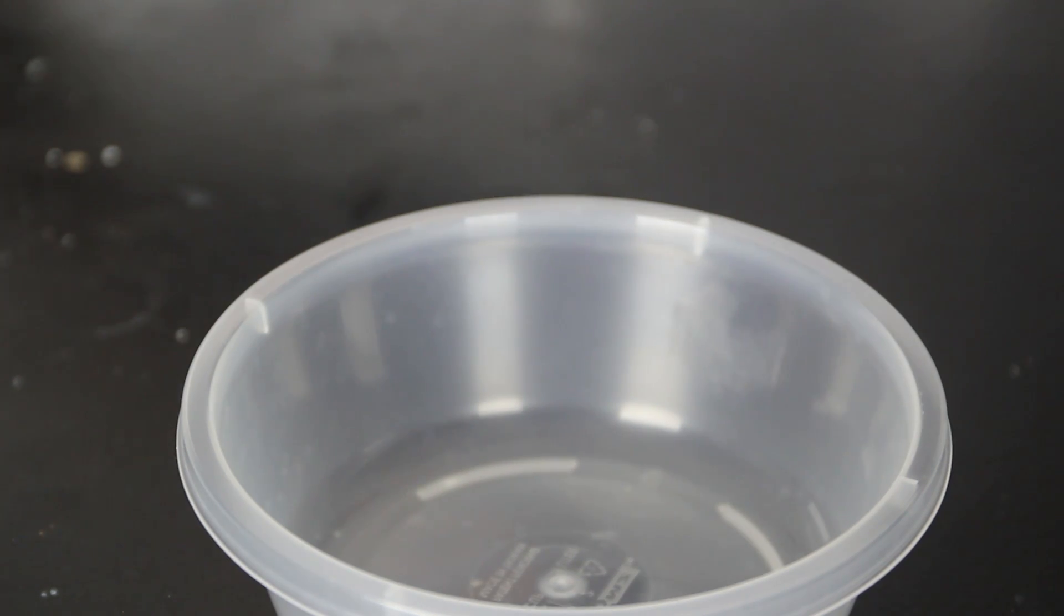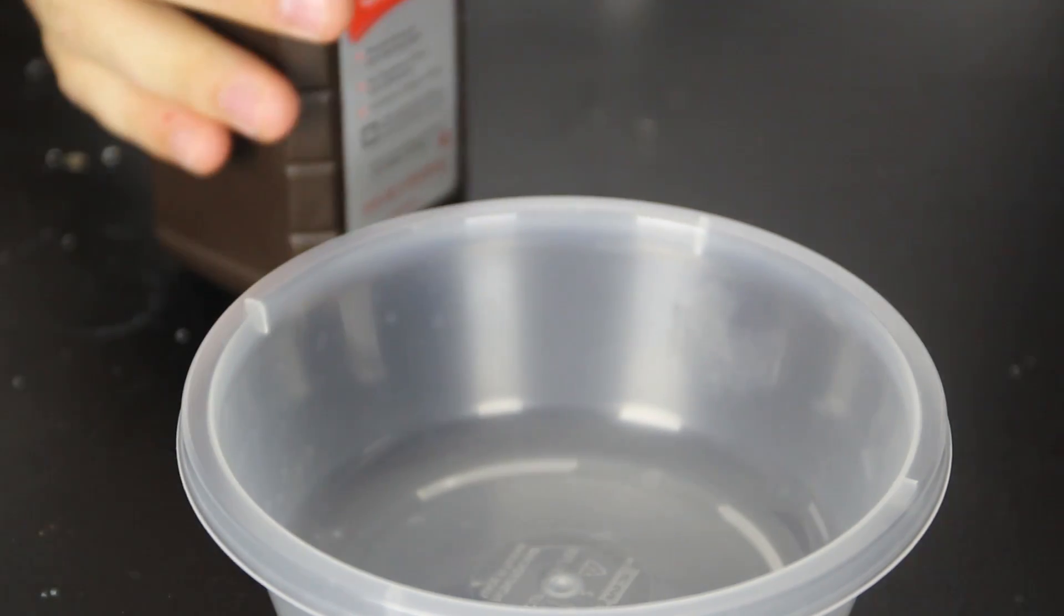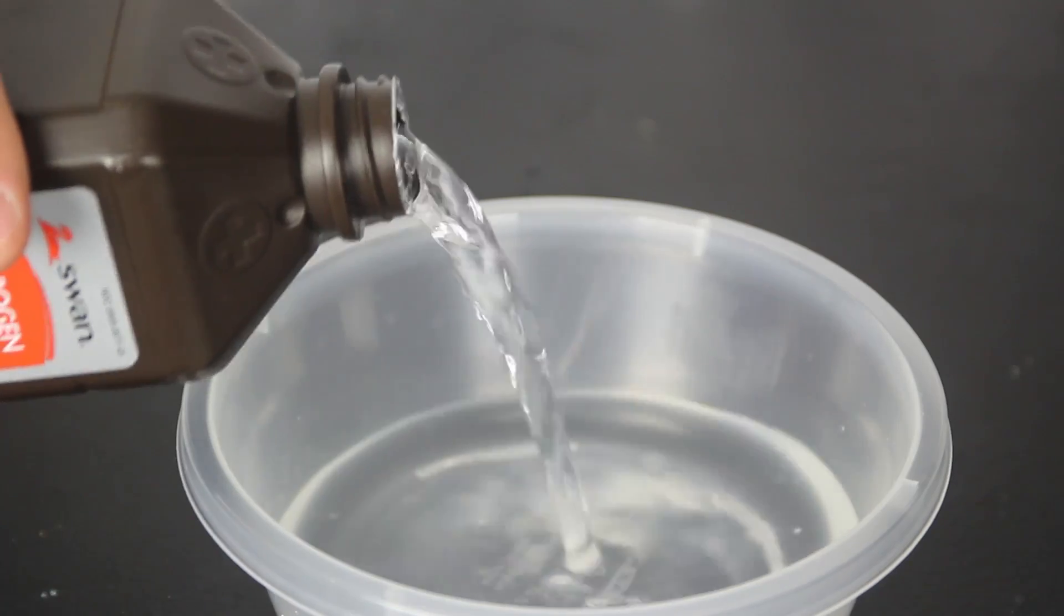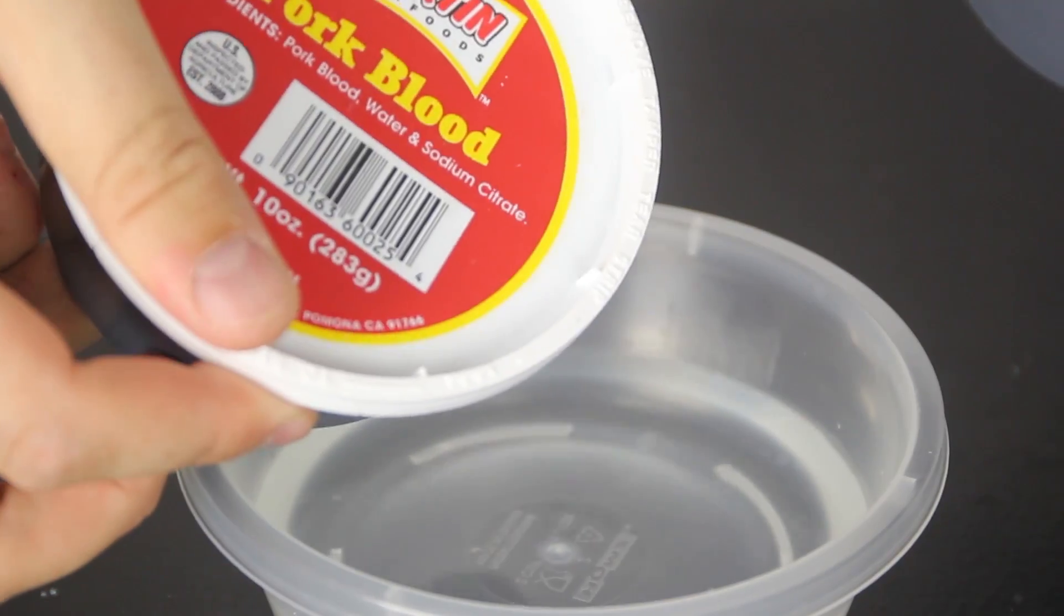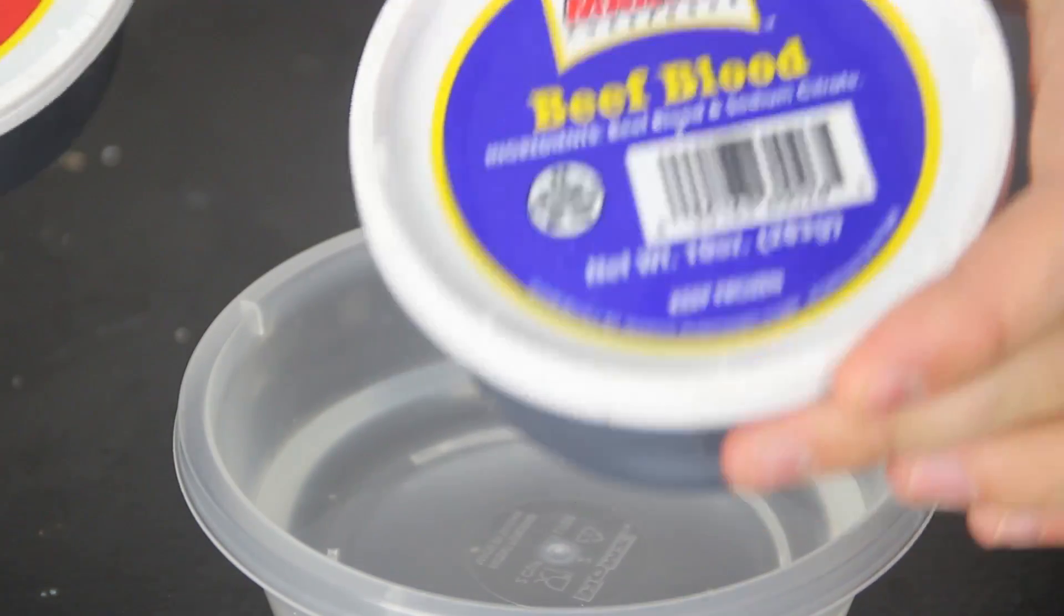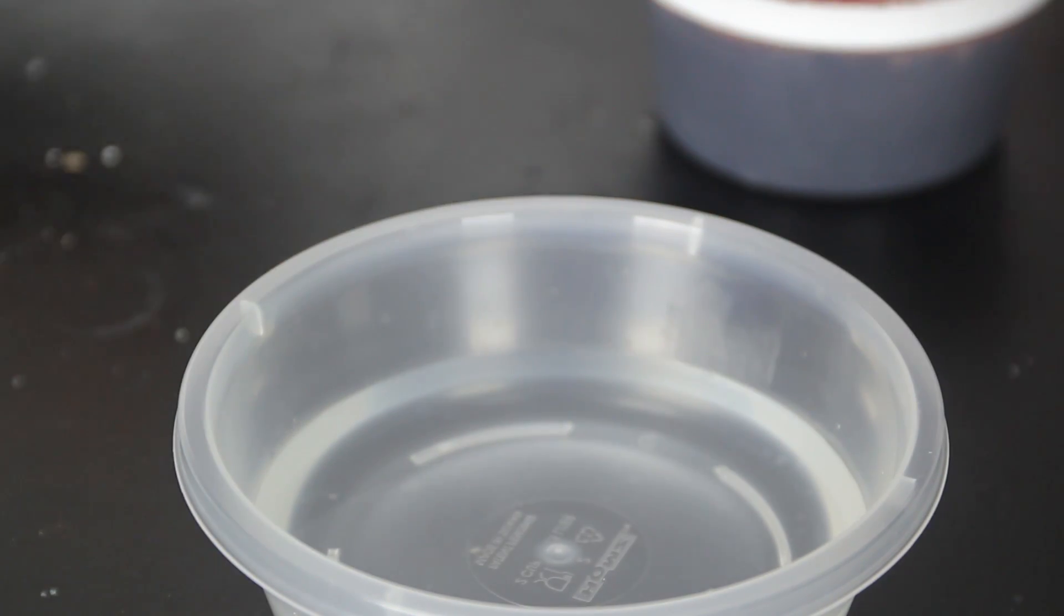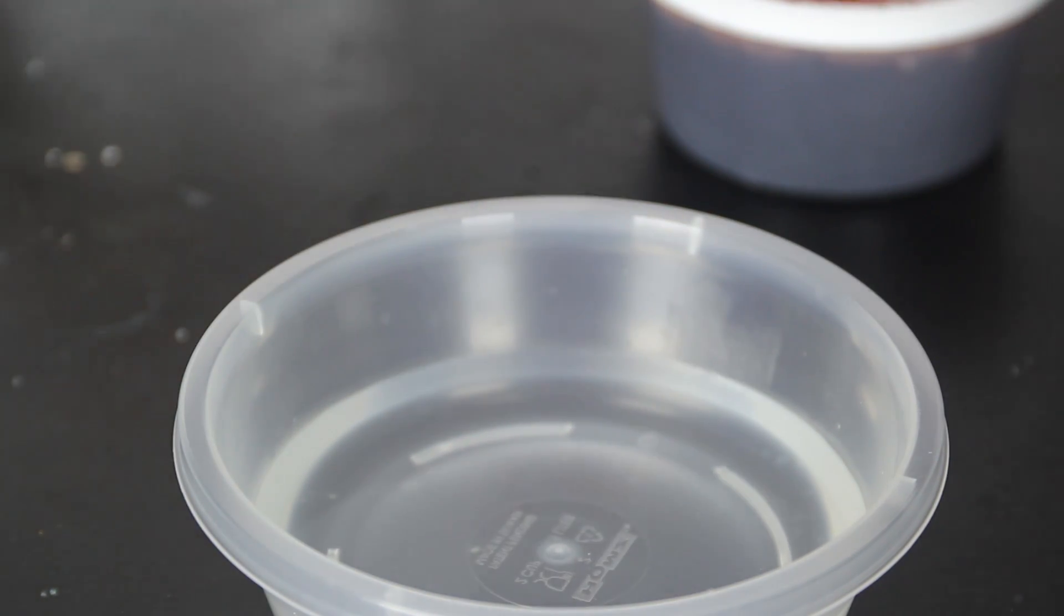Kids, do not try this at home. I'm gonna grab 3% hydrogen peroxide, put it in a container just like that and then I have pork blood and beef blood and I'm gonna drop a few drops in there and let's see what happens.